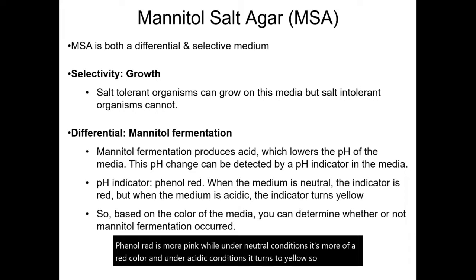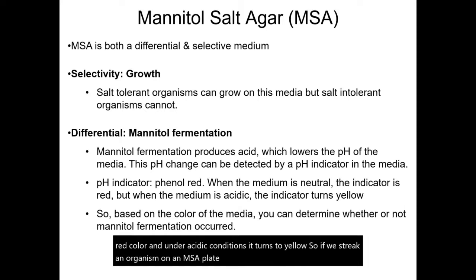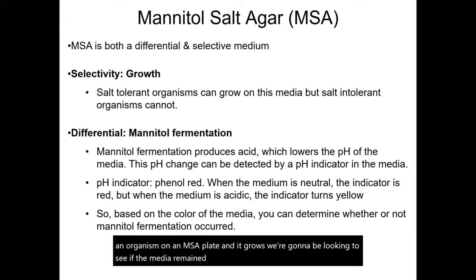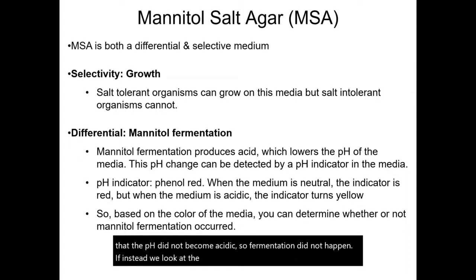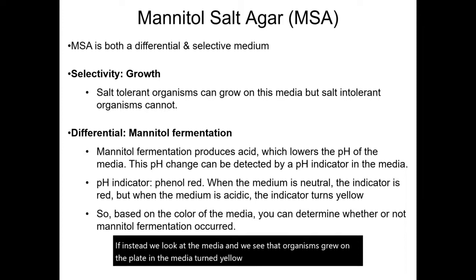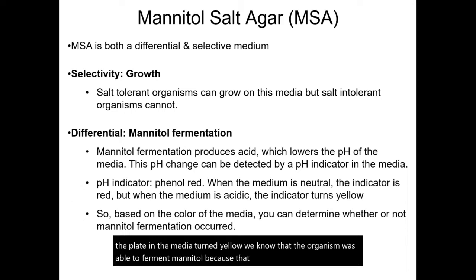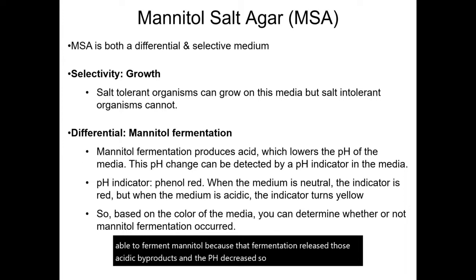Included in the media is a pH indicator called phenol red. Under basic conditions, phenol red is more pink; under neutral conditions, it's more of a red color; and under acidic conditions, it turns yellow. So if we streak an organism on an MSA plate and it grows, we look to see if the media remained red — meaning the pH did not become acidic and fermentation did not happen. If the media turned yellow, we know the organism was able to ferment mannitol, because that fermentation released acidic byproducts and the pH decreased, so phenol red turned yellow.